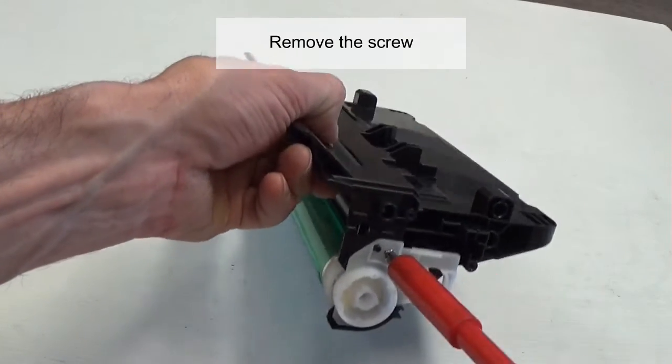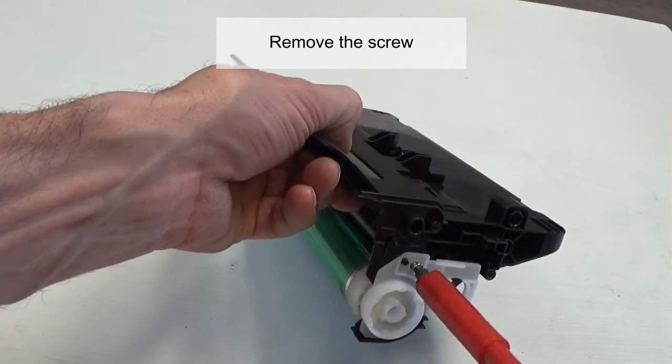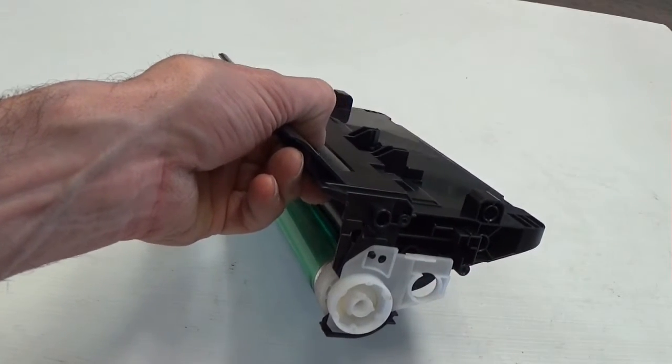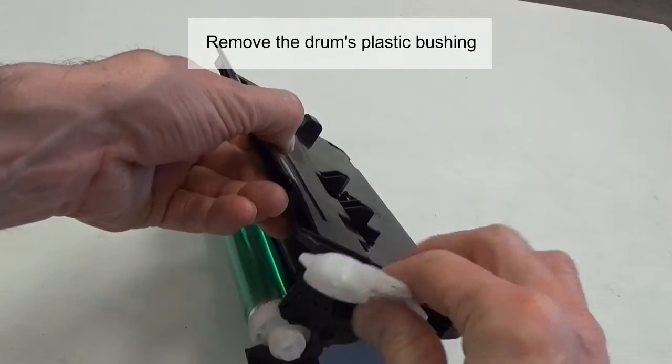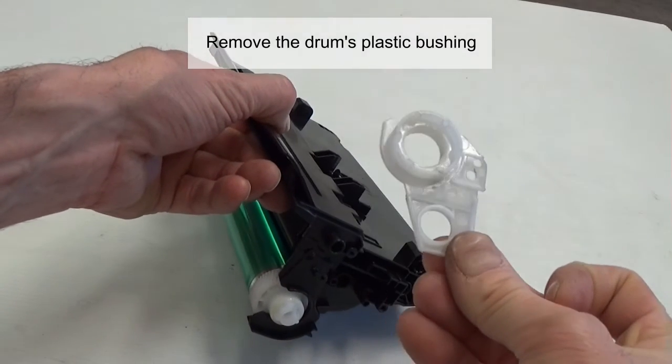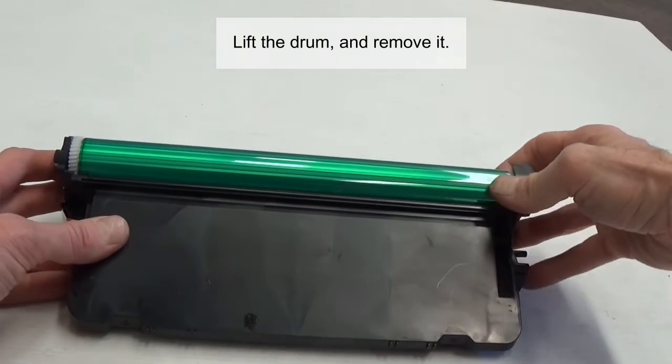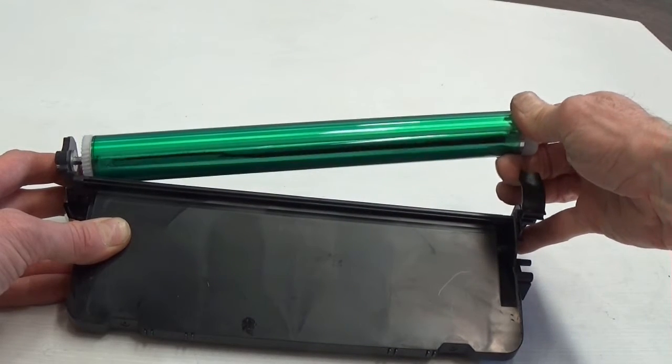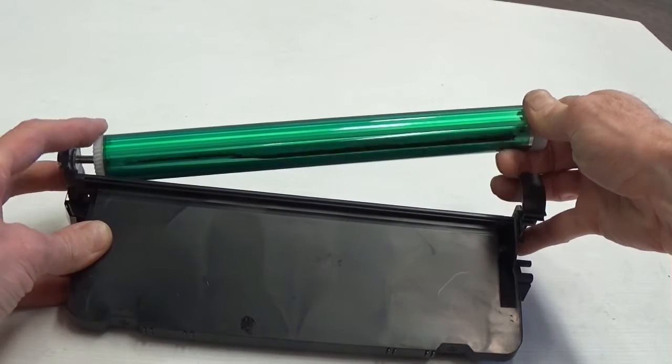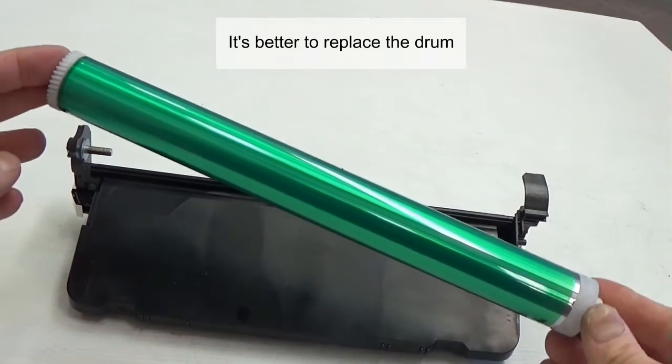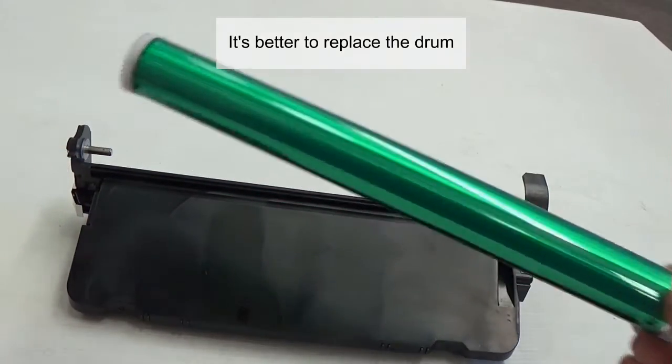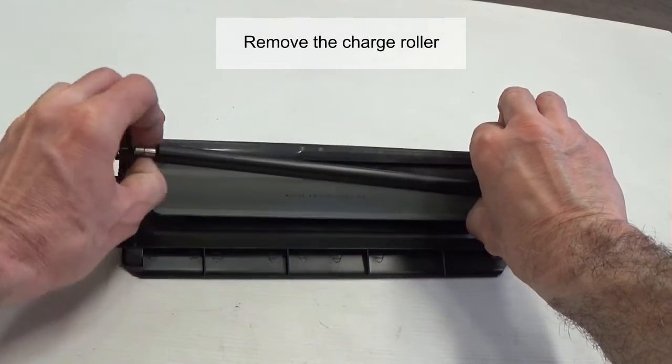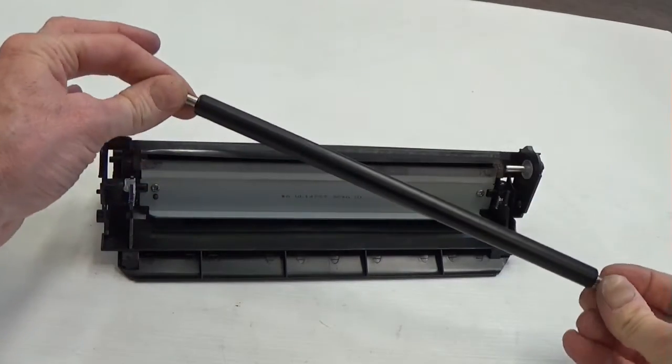Remove the screw. Remove the drum's plastic bushing. Lift the drum and remove it. It's better to replace the drum. Remove the charge roller.